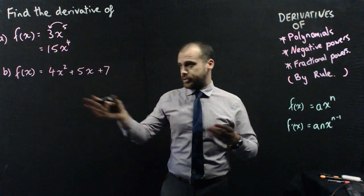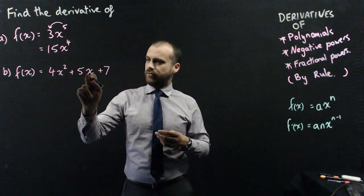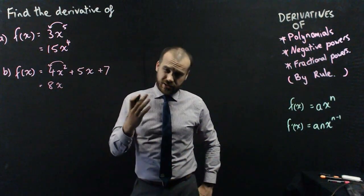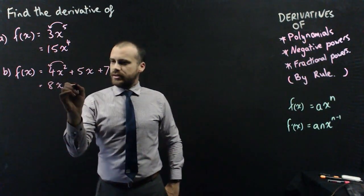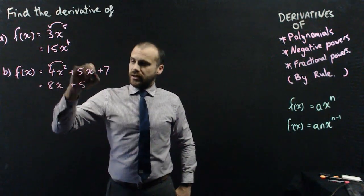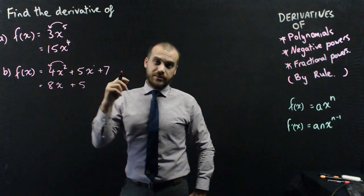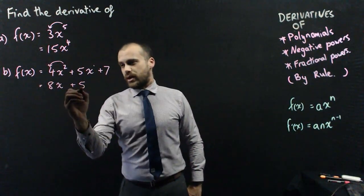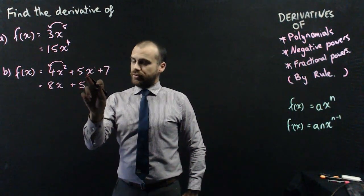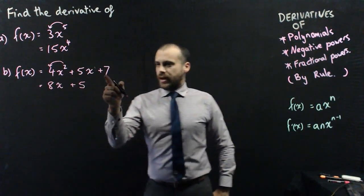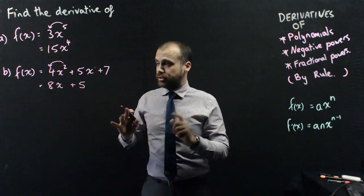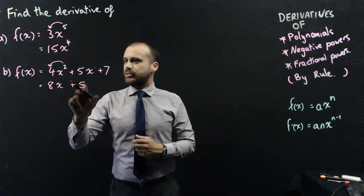Now we can do longer polynomials. Here's another example, 4x to the 2 plus 5x plus 7. Now the power comes out the front, 2 times 4 is 8. The power decreases by 1, so x to the 2 becomes x to the 1, or just x. Now this next one's interesting. That's kind of like x to the 1. So the 1 can come out, so it becomes 5 times 1, which is 5. And then that decreases the power by 1. So x to the 1 becomes x to the 0, and x to the 0 is 1. In other words, if you've got 5x, or 7x, or 100x, the derivative of that's just going to be the number. And then this one here, there's no x there at all. So when we derive a constant, it disappears totally. So there's the derivative of 4x squared plus 5x plus 7. It's 8x plus 5.